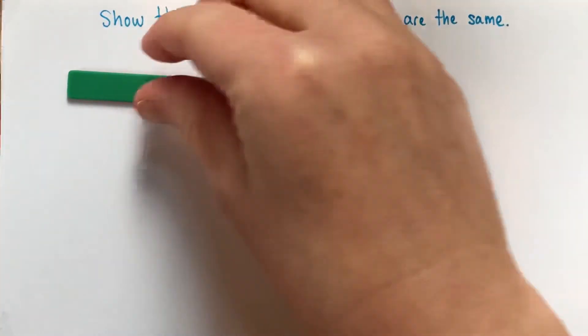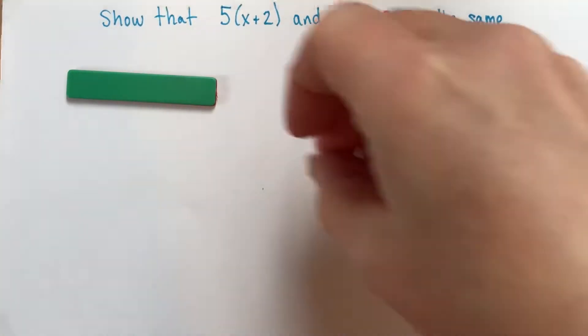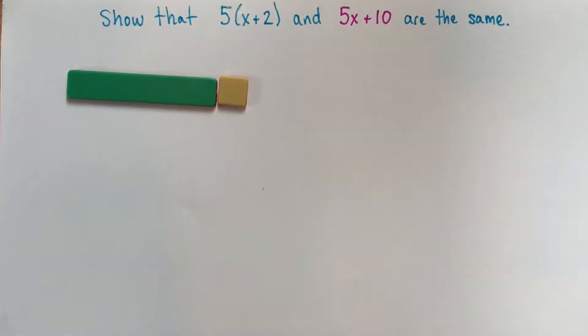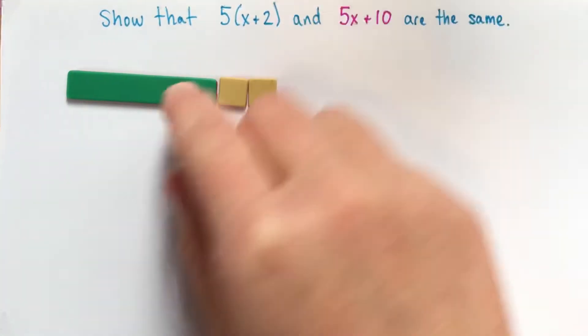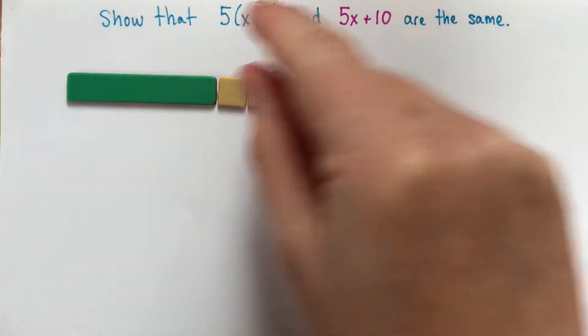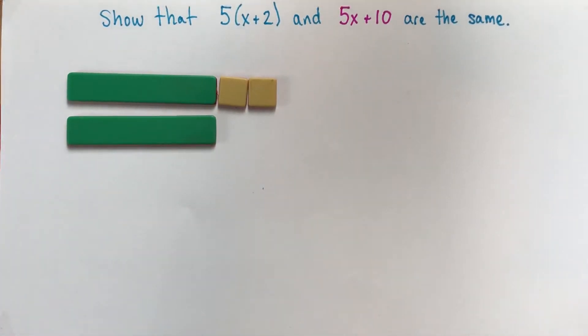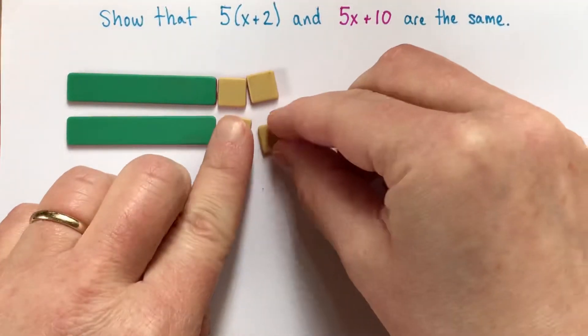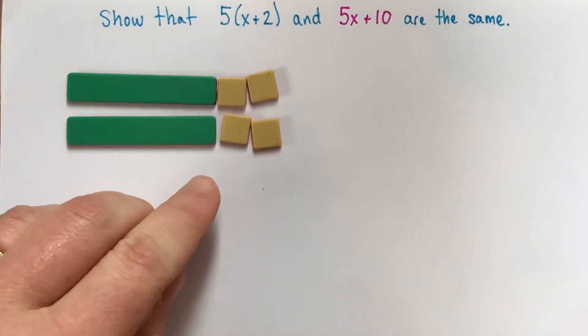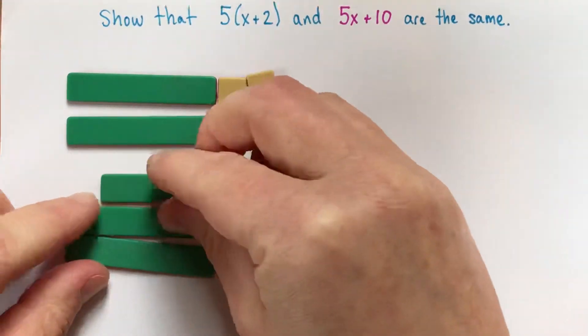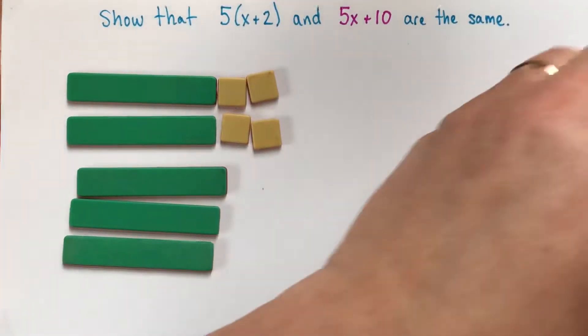So I'll use my algebra tiles here. I'll make one group of x plus 2. With my algebra tiles, my positives are green and sort of beige. And then I'll make 5 groups the same, so each one will have x plus 2. It's a bit fiddly to get all these on here. I'll get these on too.